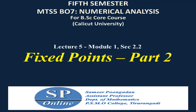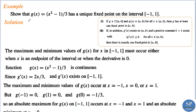Hello everyone, this is the second part of the topic fixed points. We will discuss an example: show that the function g(x) = (x² - 1)/3 has a unique fixed point on the interval [-1, 1]. We are given the interval [-1, 1] and we have to show that this function has a unique fixed point on this interval.